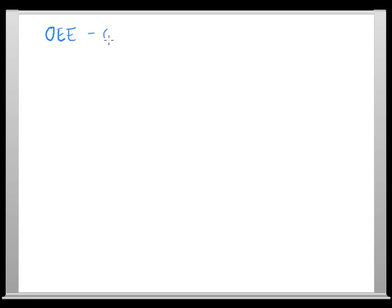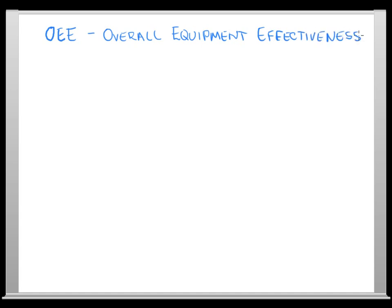In this session we're going to talk about OEE, which stands for Overall Equipment Effectiveness. In short, what we're doing is seeing how efficiently we're running our machine.